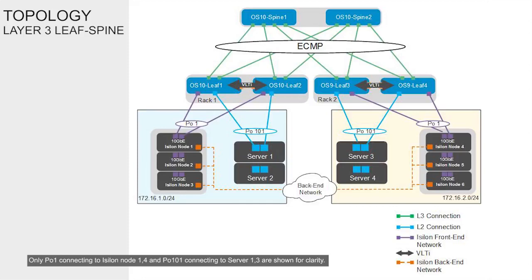Connections within RACs from host to leaf switches are Layer 2. The leaf switches are in VLT. The leaf switches connect to Isilon nodes and servers using port channels. For details on the design considerations, the naming of autonomous system numbers, point-to-point addressing, and loopback addressing, refer to the deployment guide document.